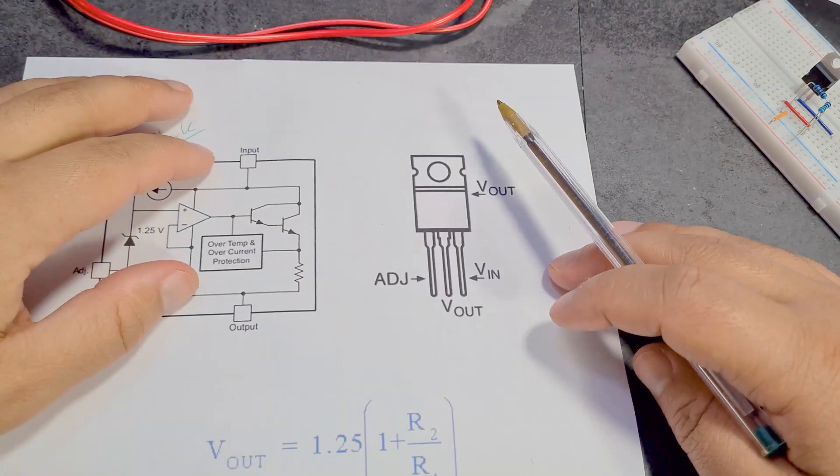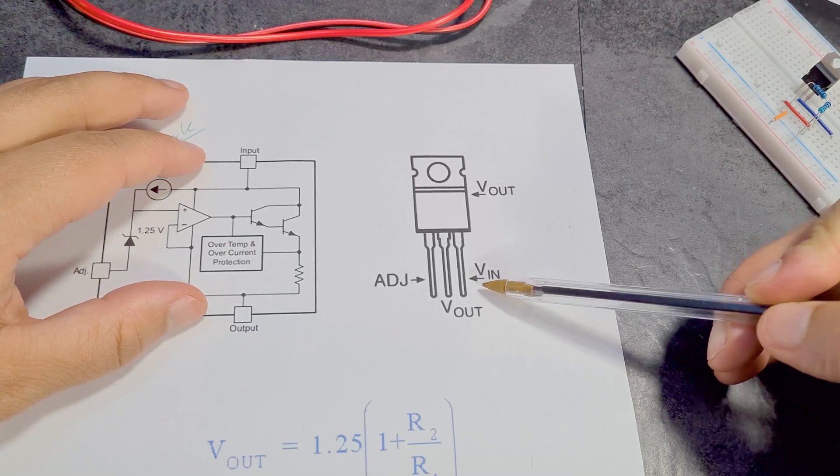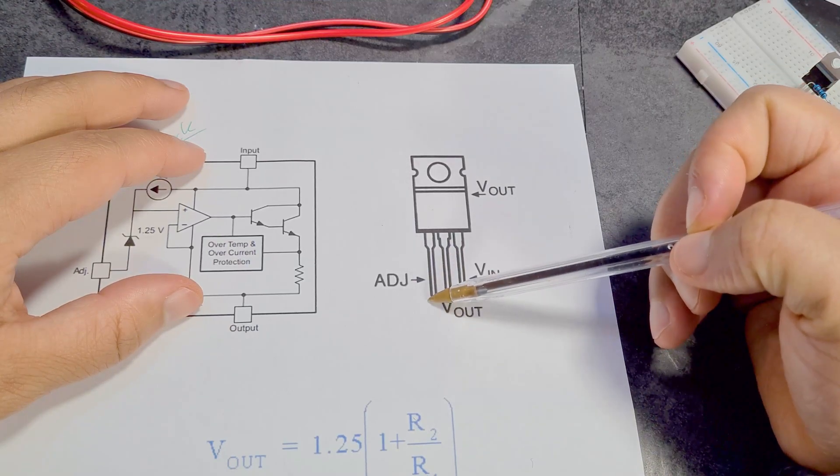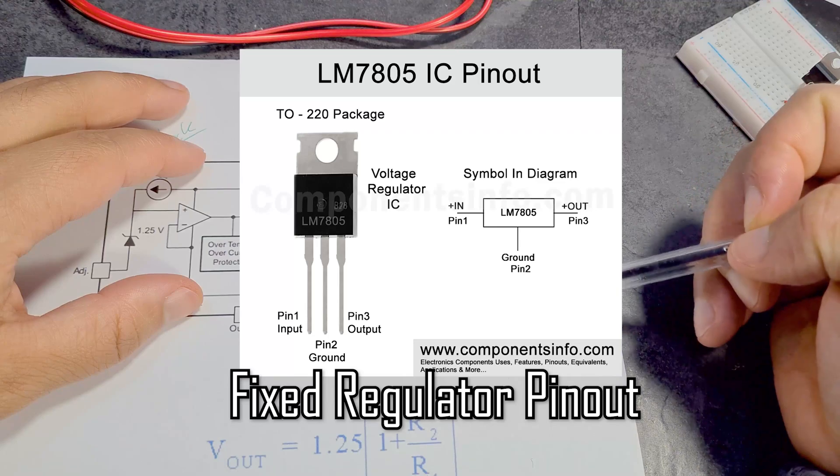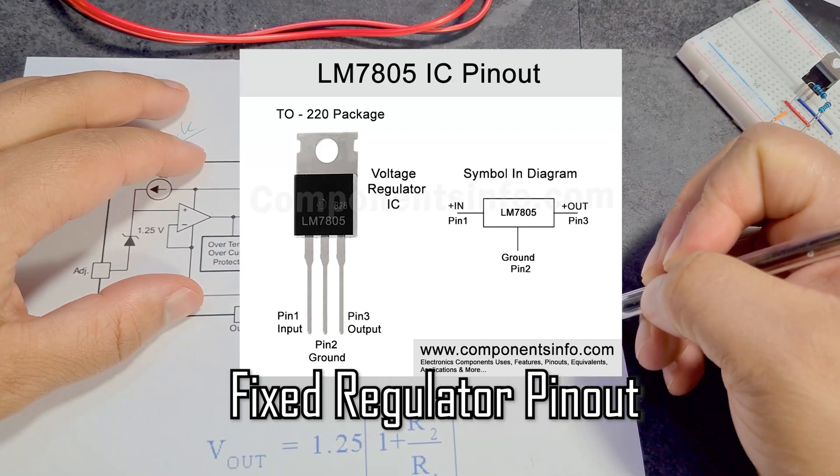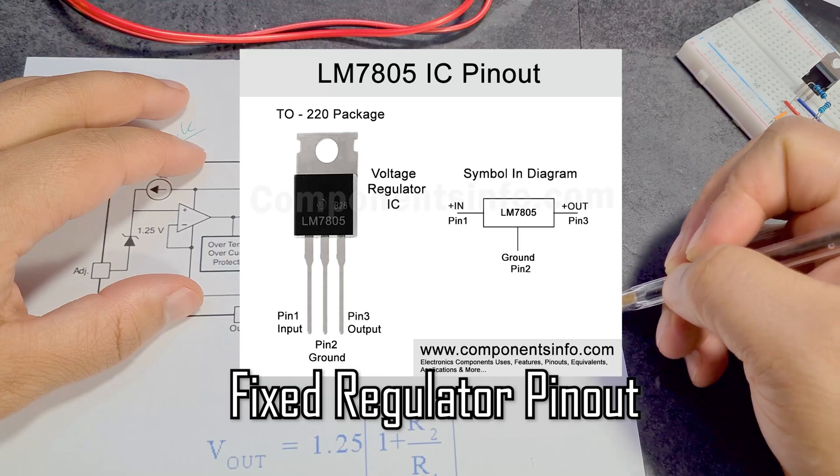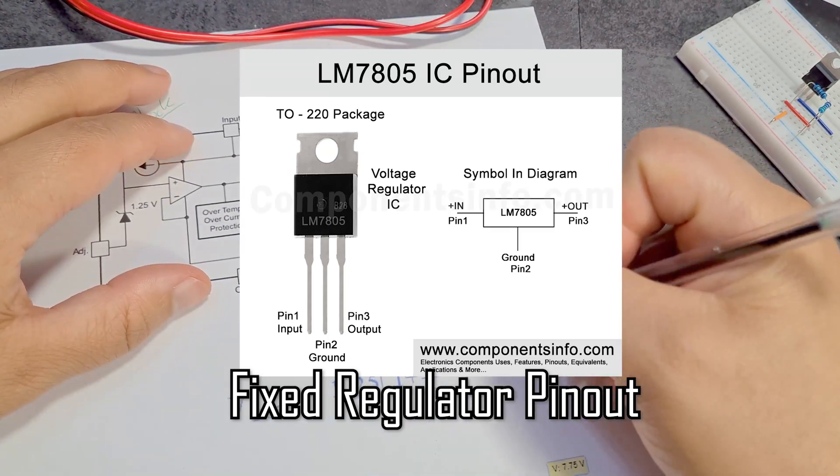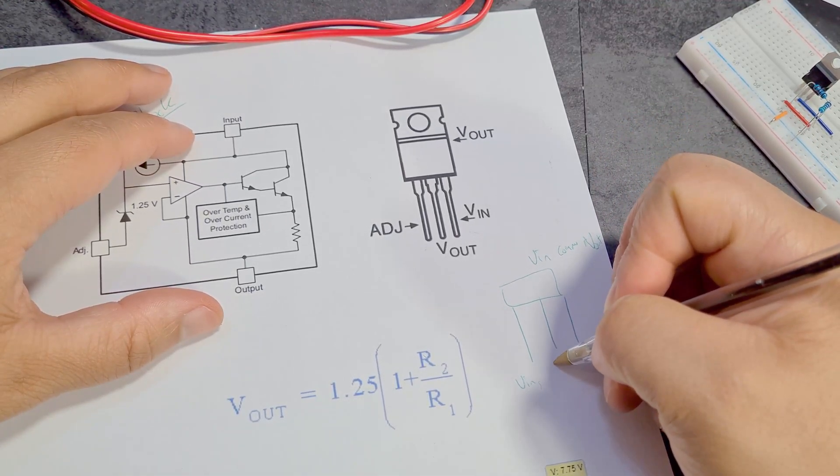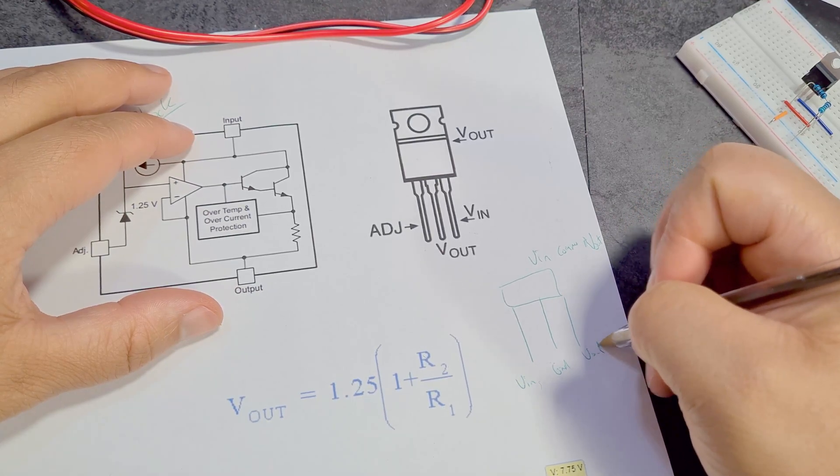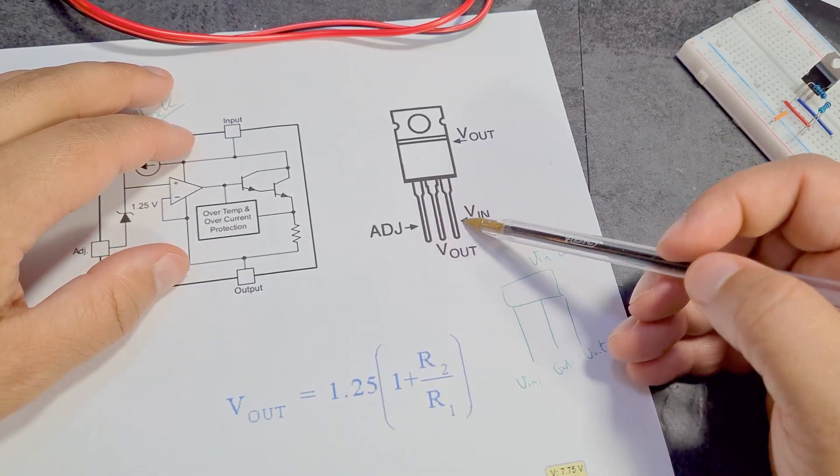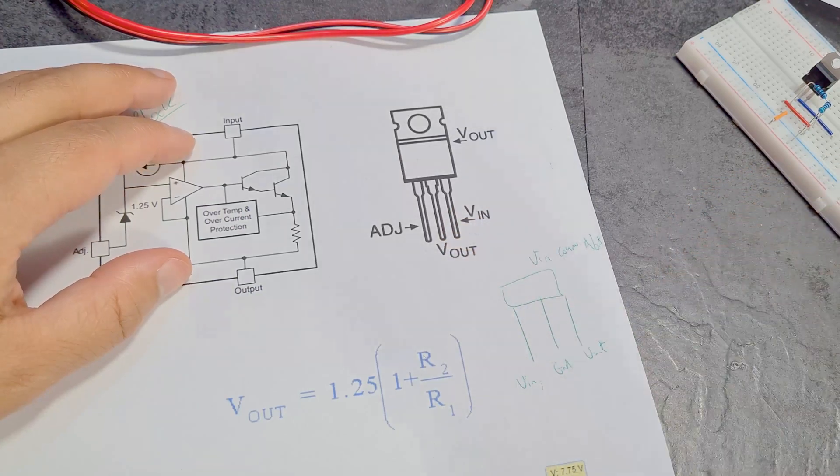So the only other thing to mention here with the adjustable voltage regulators is that for these adjustable voltage regulator ICs, the adjust pin is here on the left, and then you've got V out in the middle and V in on the right. So previously we had V in and then common or ground and then V out. For this one, V out is in the middle, V in, adjust. It's always good to just check out the pin out.